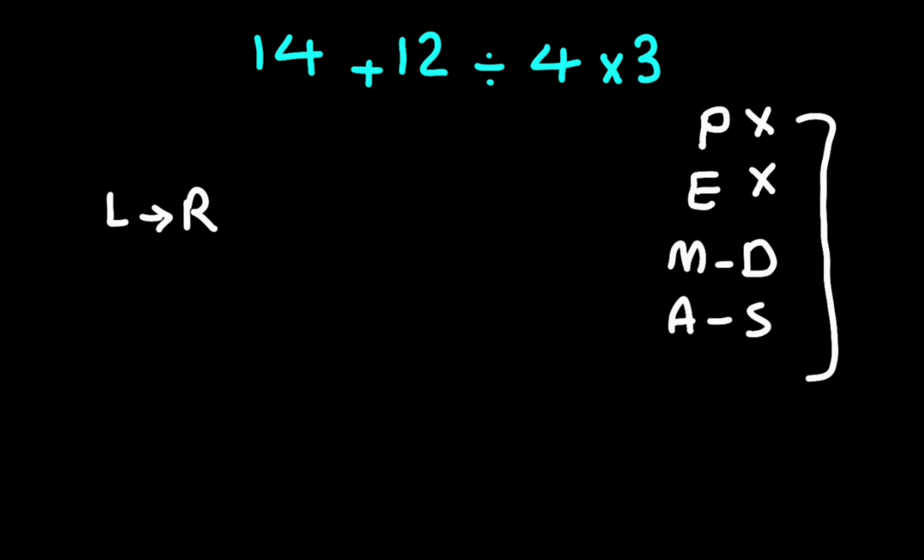Now on the left side we have one division that we have to solve first, not this multiplication. 12 divided by 4 equals 3. And in second step we have 3 times 3. 3 times 3 equals 9.